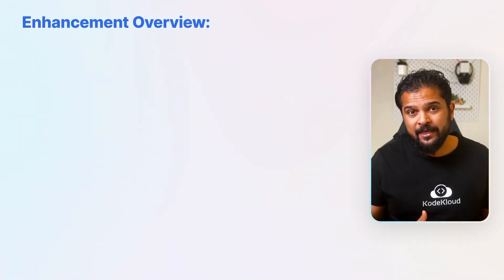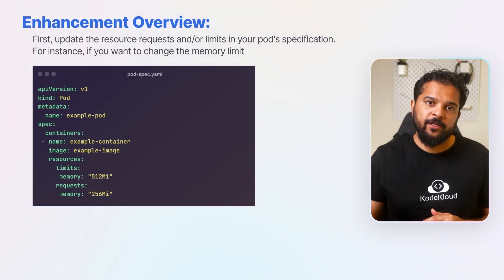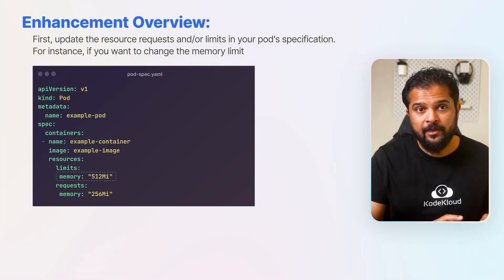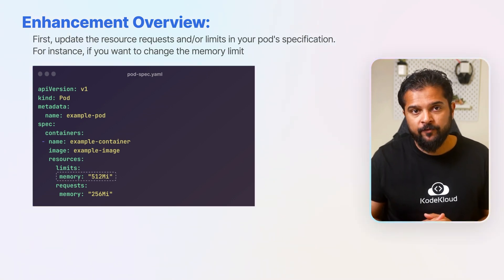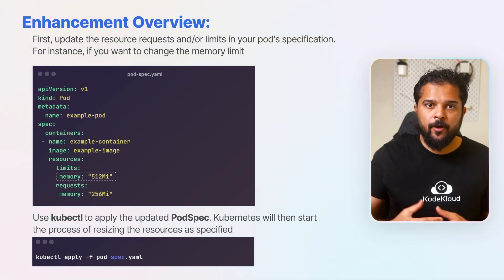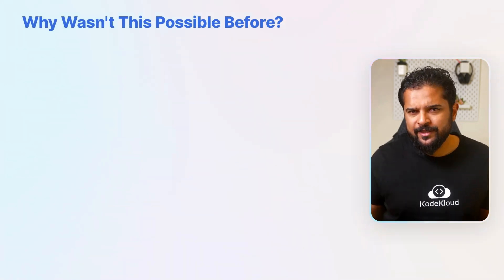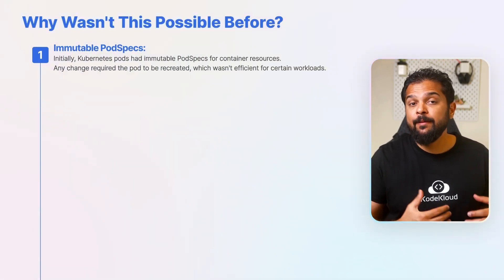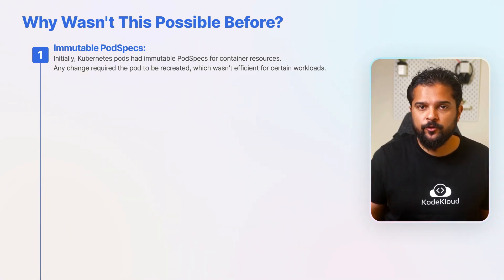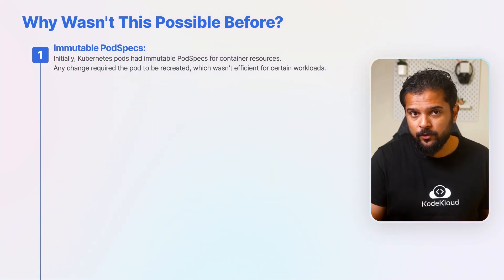With this enhancement to dynamically update pod resources in Kubernetes 1.29, you can follow these steps. First, update the resource requests or limits in your pod specification — for instance, if you want to change the memory limit, edit it in the pod specification file. Then use the kubectl apply command to apply the updated pod spec, and Kubernetes will start the process of resizing resources as specified. Previously, Kubernetes pods had immutable pod specs for container resources, so any change required the pod to be recreated, which wasn't efficient for certain workloads.